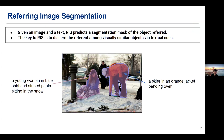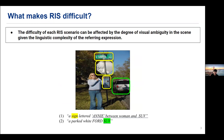Referring Image Segmentation segments an object when you are given an image and a freeform query referring to that certain target object. What differentiates RIS from other grounding tasks is that the scene is usually given in the way that visually similar objects coexist, as in the slide.